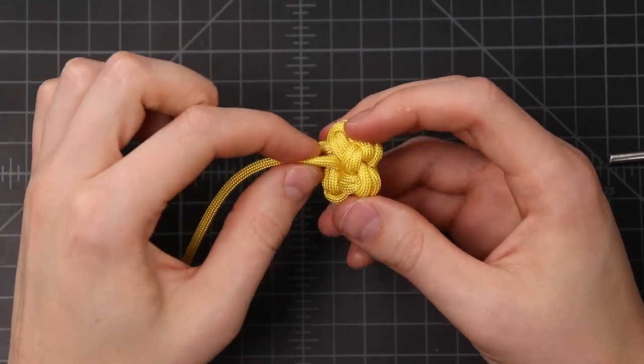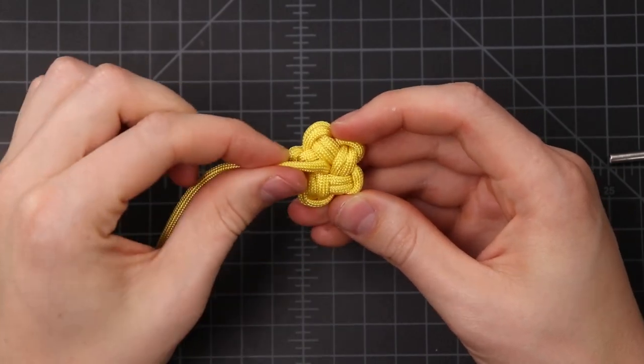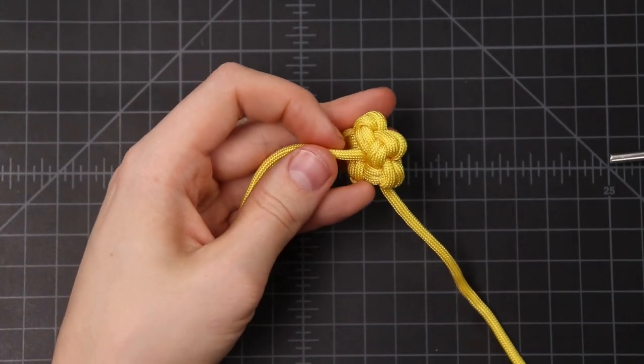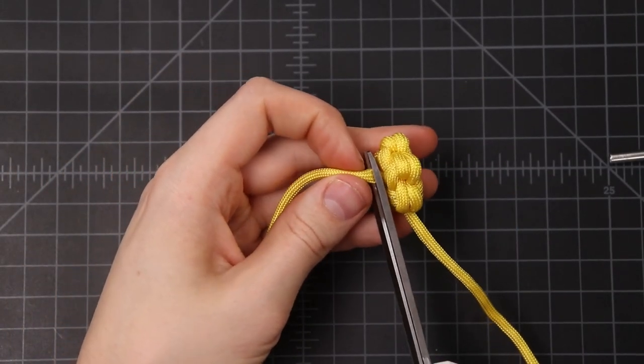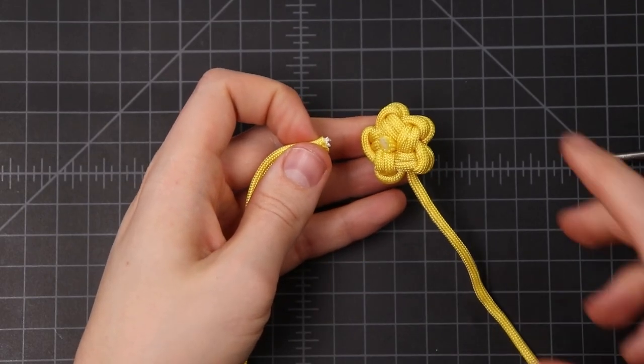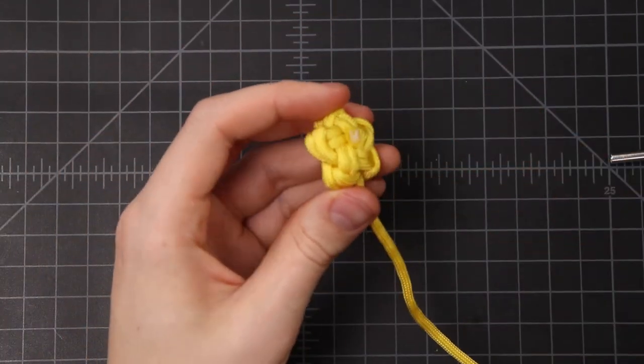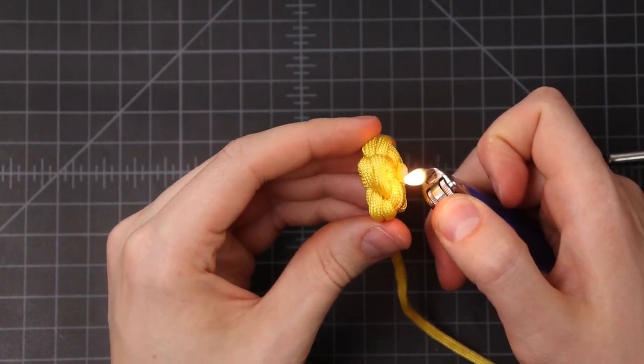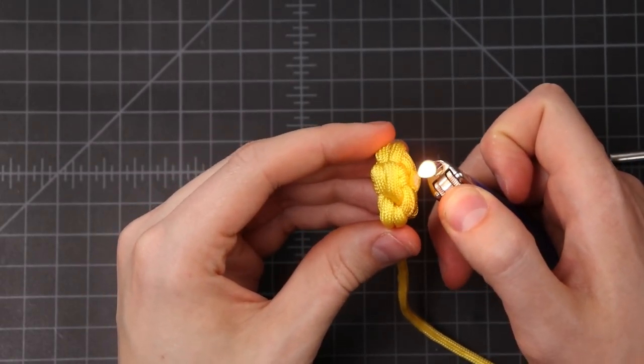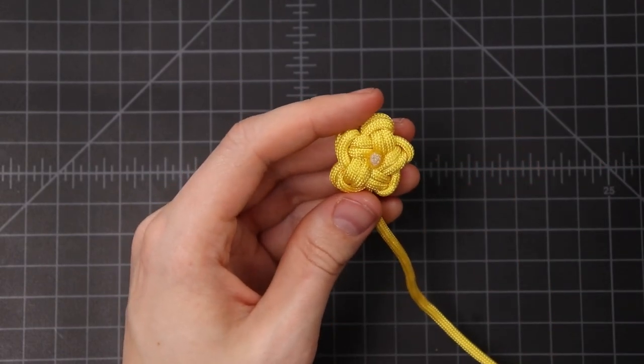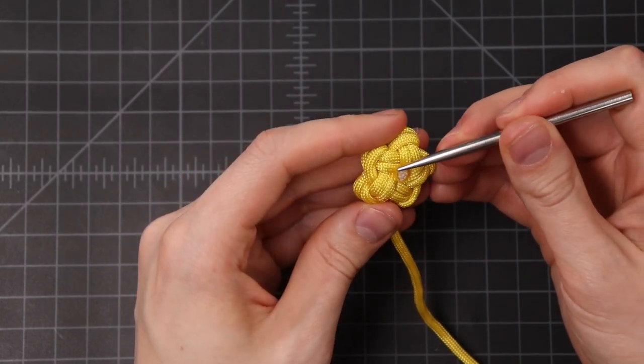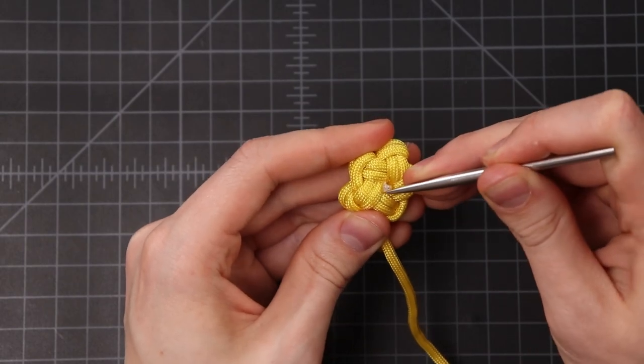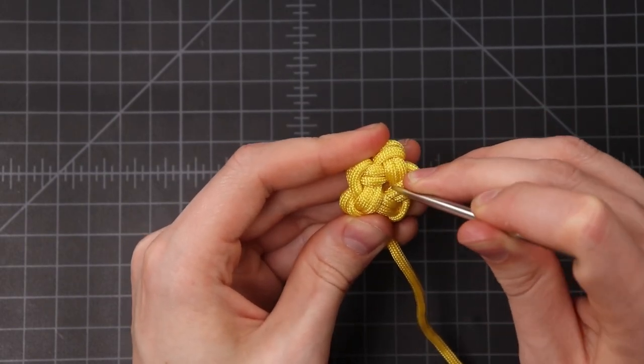So to finish this off, we'll first cut this end coming out the middle. It's pretty easy to hide that end. We'll just leave our typical eighth of an inch. And then run the lighter over it a little bit, just to keep it from fraying. It doesn't have to look nice at this point. And then don't press it against. We want to take our fid, and just push it into the center of the knot. And that'll hide that end entirely.